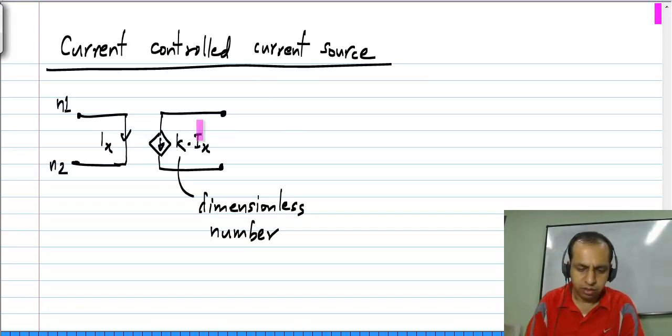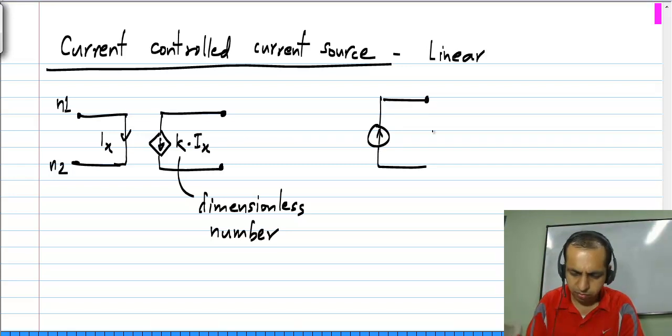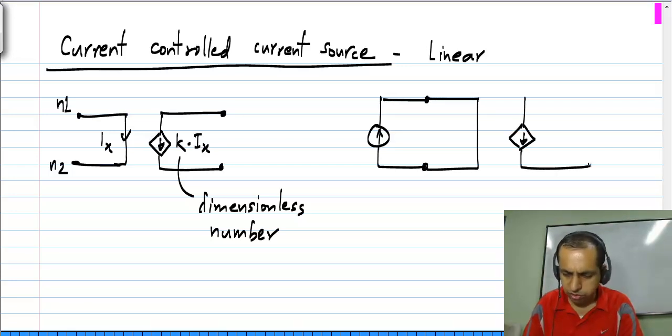And again from this relationship, it is obvious that this is linear. And what it means is that if you drive a current controlled current source by a current source.